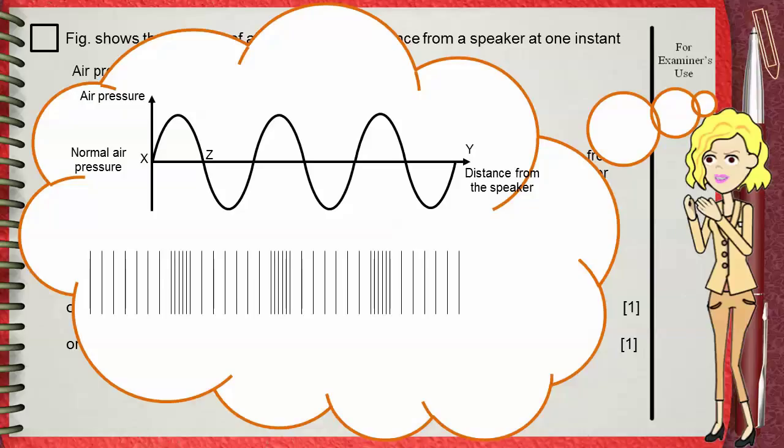Do you see those areas where lines are far apart from each other? We named them before as rarefactions. And we say that in these regions, air pressure is low. That's why the rarefaction, which is the low pressure region, corresponds to the trough of the wave above.